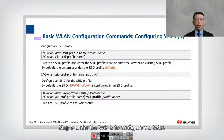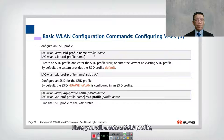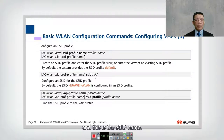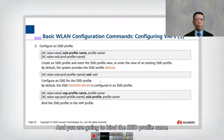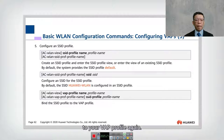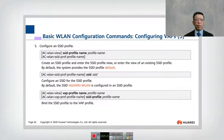Step five under the VAP is to configure the SSID. Here you create an SSID profile, give it a name — the profile name and the SSID name — then bind the SSID profile name to your VAP profile. All of these are templates that can be reused, so you can reuse the VAP profile name.